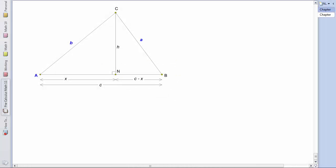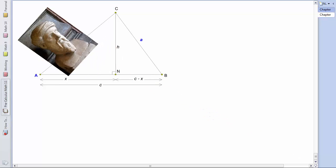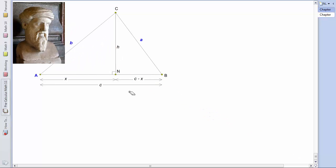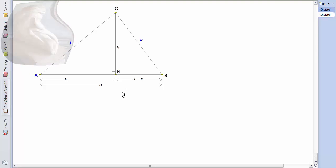And now once again, our friend, Mr. Pythagoras, comes out to play. In the triangle on the right, we have A squared equals H squared plus C minus X squared. And on the left, we have B squared equals X squared plus H squared. Now notice that both of these have H squared as a part of it, so let's isolate the H squared.